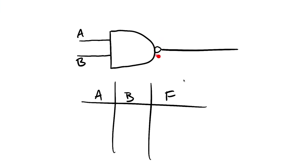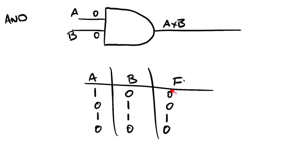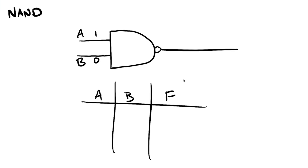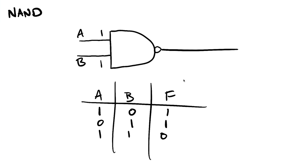This one looks exactly like the AND gate but it has this little nub at the end — this is called a NAND gate, like a negative AND, the opposite. Whatever we saw in the truth table for the AND gate, the outputs are going to be the opposite. One and zero — normally zero — gives me a one. Zero and one — normally zero — gives me a one. One and one — normally one — gives me a zero. Zero and zero — normally zero — gives me a one. That's your NAND gate.